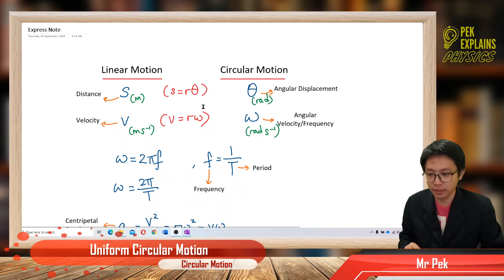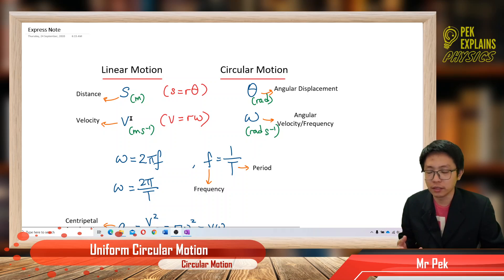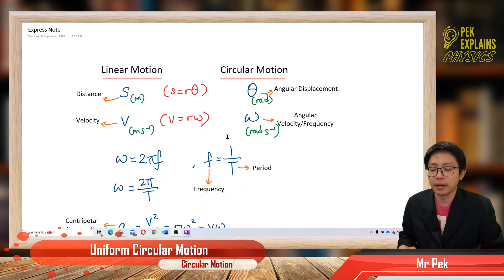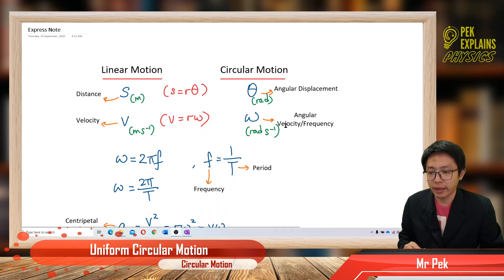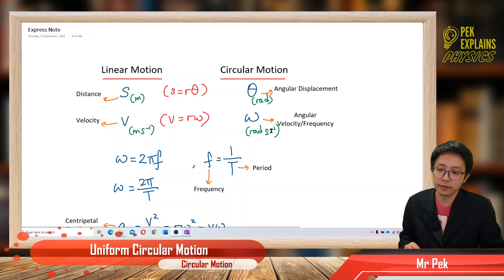In linear motion we also have velocity, measured in meters per second. But for circular motion we have angular velocity, sometimes called angular frequency. The unit for angular velocity is radians per second.